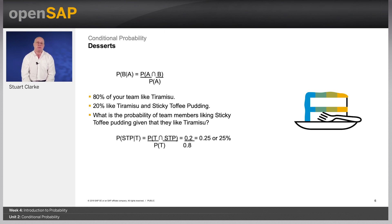Let's look at an example. 80% of your team like tiramisu and 20% like tiramisu and sticky toffee pudding. What's the probability of team members liking sticky toffee pudding given that they like tiramisu? Using the formula on screen you can see that the answer comes to 25%.